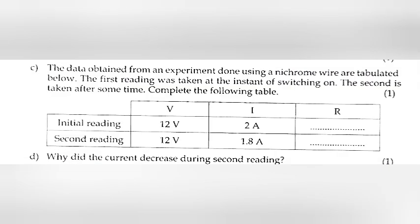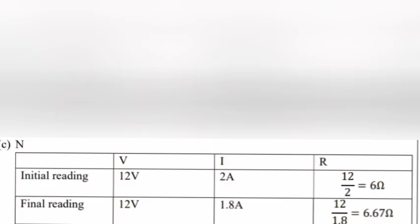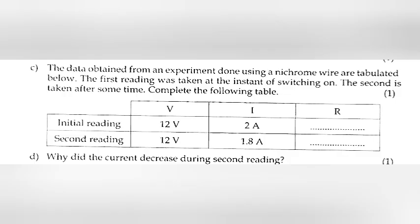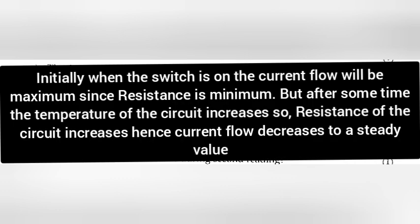C: The data obtained from an experiment done using a Nichrome wire are tabled below. The first reading was taken at the instant of switching on. The second is taken after some time. Complete the following table. Answer: Initial reading R: 12 by 2 equals 6 Ohm. Final reading R is equal to 12 by 1.8 equals 6.67 Ohm. D: Why did the current decrease during second reading? Answer: Initially, when the switch is on, the current flow will be maximum since resistance is minimum. But after some time, the temperature of the circuit increases. So, resistance of the circuit increases. Hence, current flow decreases to a steady value.